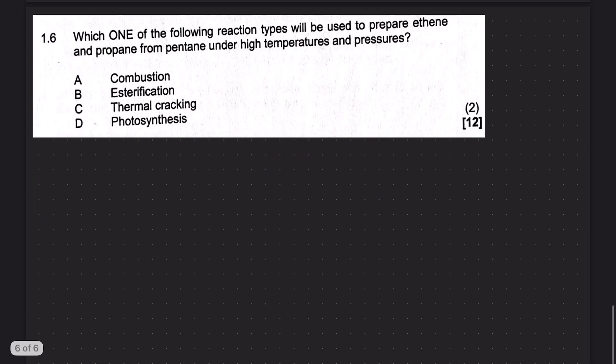And the last question. Which one of the following reaction types will be used to prepare ethene and propane under high temperatures and pressures? So there's a few clues here. You are preparing ethene and propane. So some reaction, it's going to prepare an alkene and an alkane. And then you have the next clue, which has high temperatures and pressures. So high temp and high pressure. This is only one reaction. And that's called cracking. So thermal cracking since high temperature. So the answer there is going to be C.